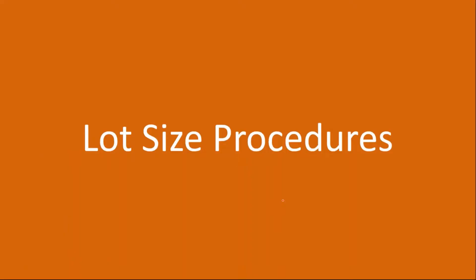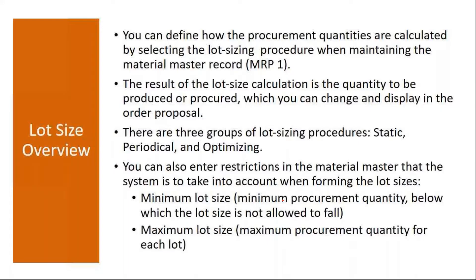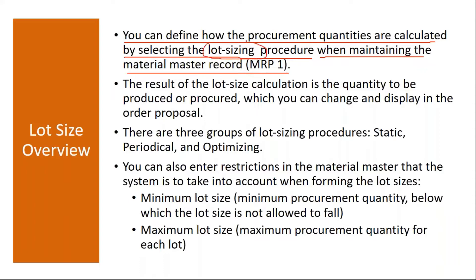First we'll start with the lot size procedures. When you run MRP, the system takes the lot size procedure maintained in the material master. You can define how the procurement quantities are calculated by selecting the lot size procedure when maintaining the material master record. The result of the lot size calculation is the quantity to be produced or procured, which you can change and display in the order proposal.